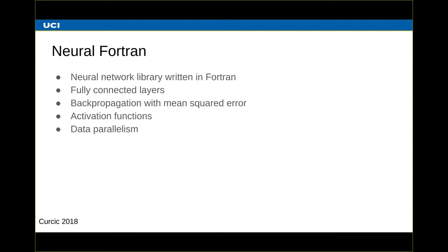Now we've established the deep learning anchor. If we go and look for a place to anchor on the Fortran side, there are really not a lot of options. Fortunately, Milan — who's also attending this conference — in 2018 created neural Fortran, which is a neural network library specifically for Fortran. It offers fully connected layers, which is one type of neural network layer. You can do the training with a specific loss function, there are multiple activation functions, and some nice features for data parallelism. Because there are so few options, neural Fortran provides a really nice interface to anchor the other side of this bridge.